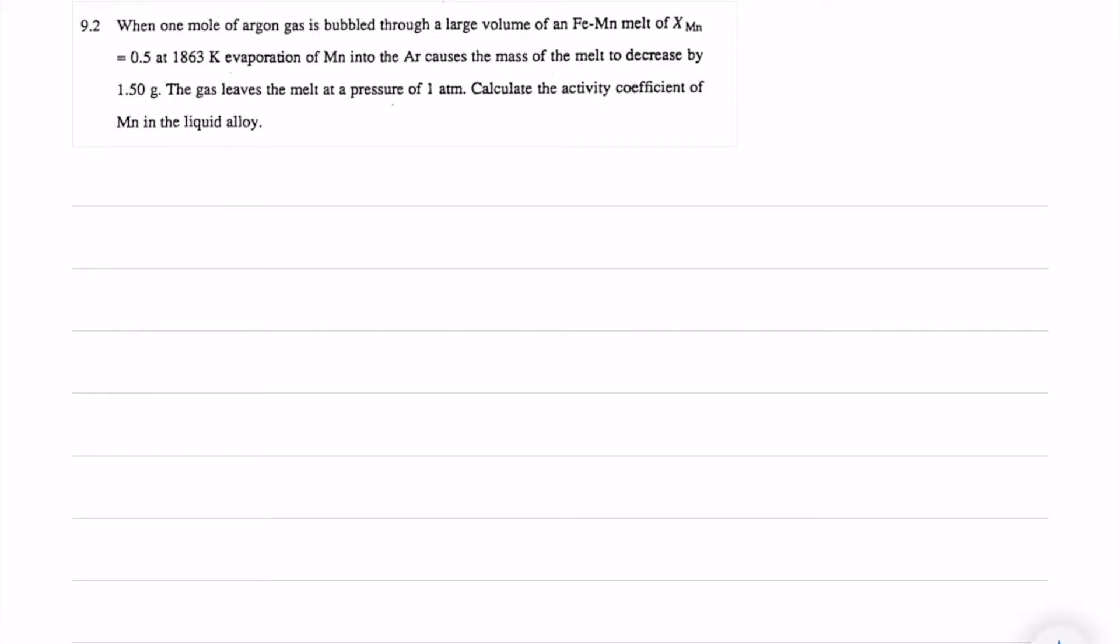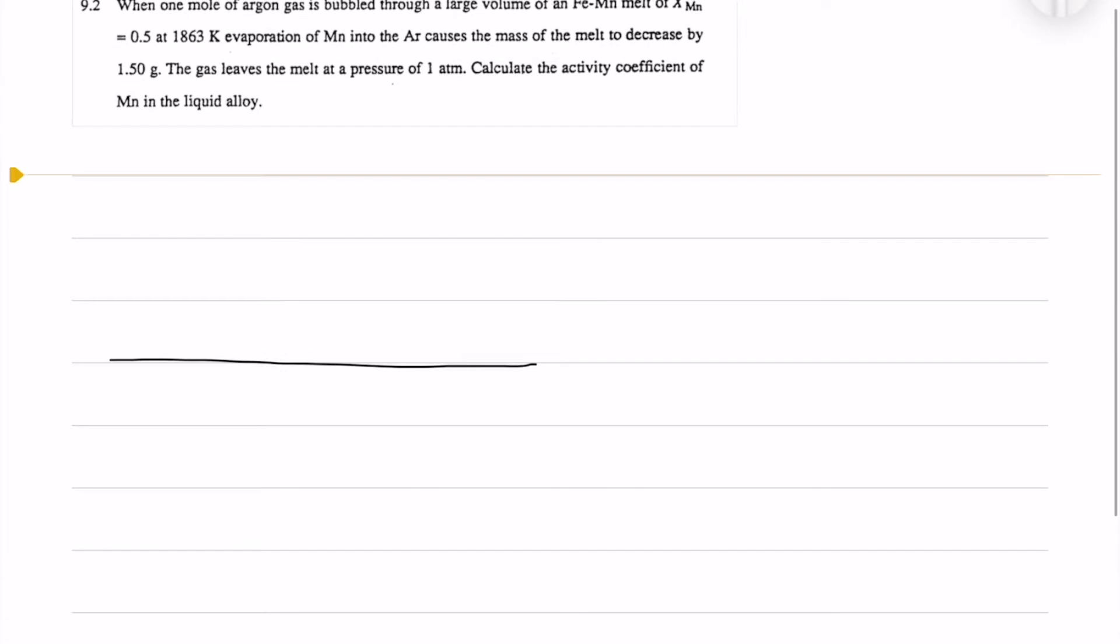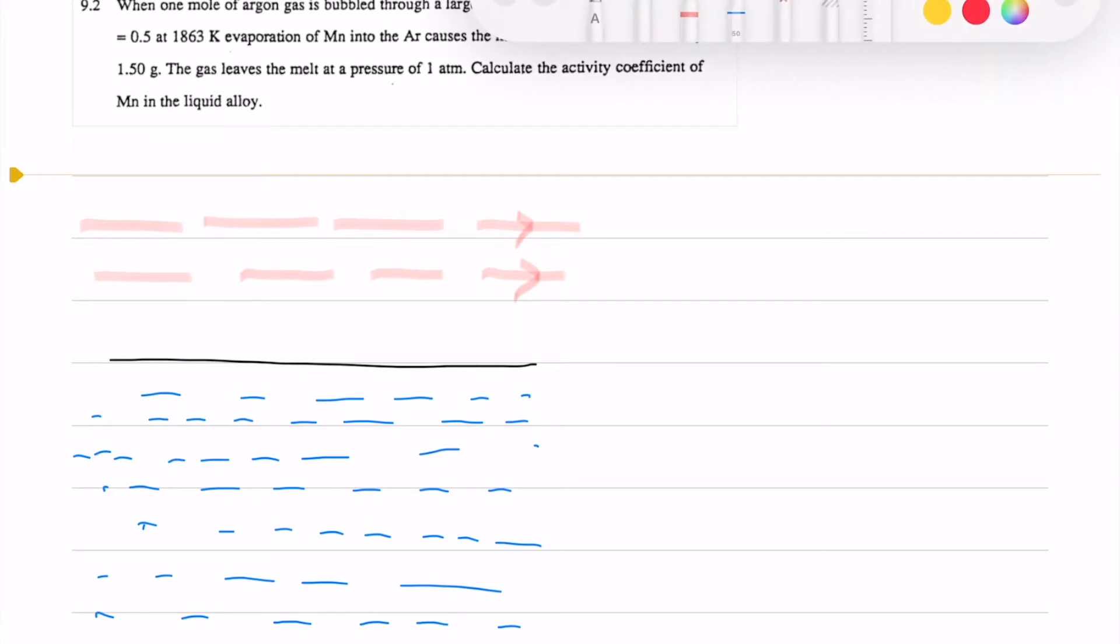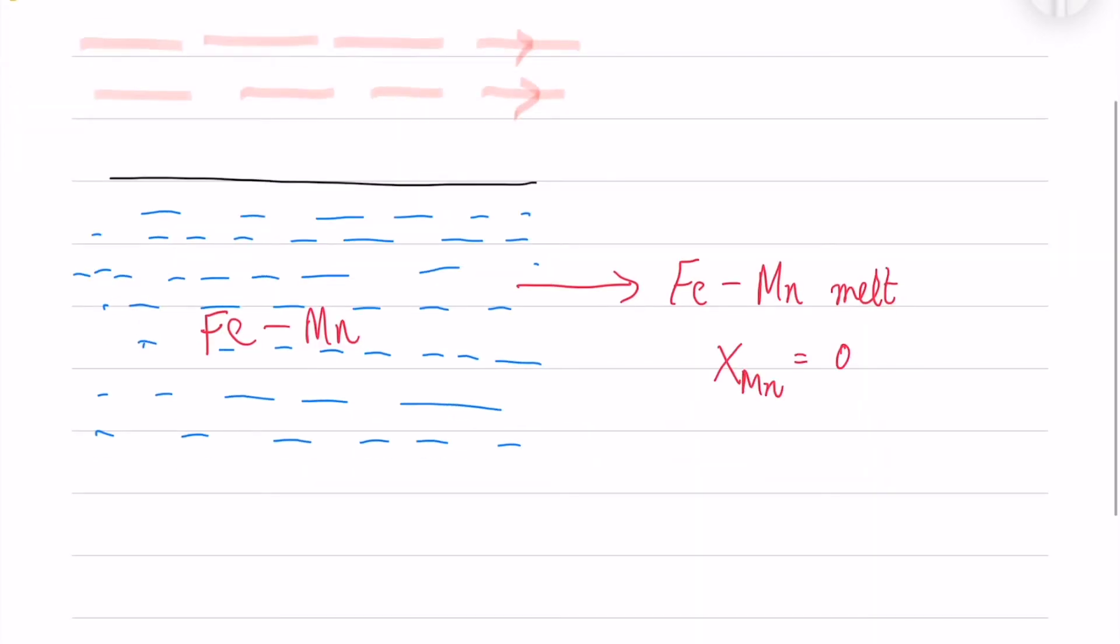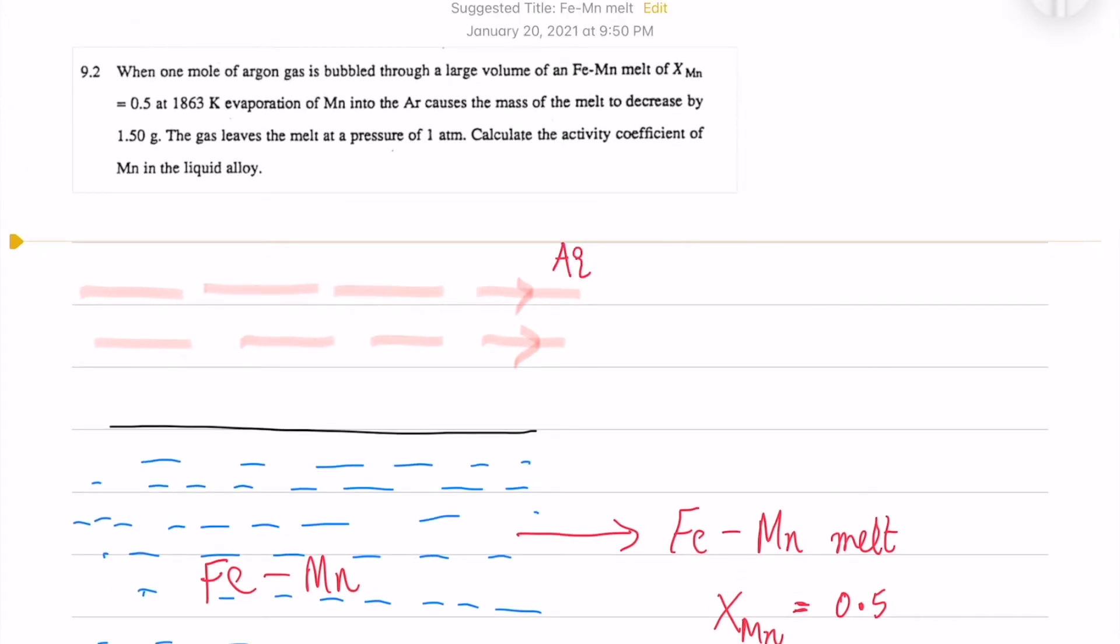In this question we have an iron-manganese melt at 1863 Kelvin and we pass argon gas through this melt. The mole fraction of manganese is 0.5 in the melt. We see that manganese evaporates into the argon gas and it also becomes a gas.